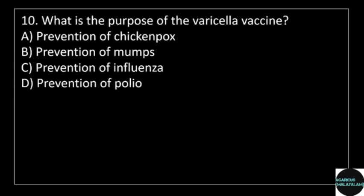10th question: what is the purpose of the varicella vaccine? Answer options: option A, prevention of chickenpox; option B, prevention of mumps; option C, prevention of influenza; option D, prevention of polio.